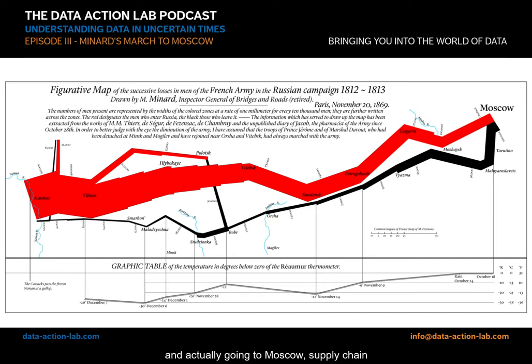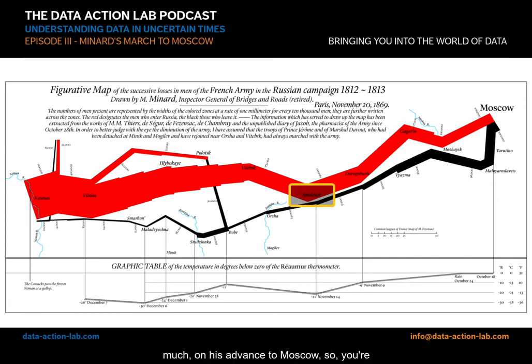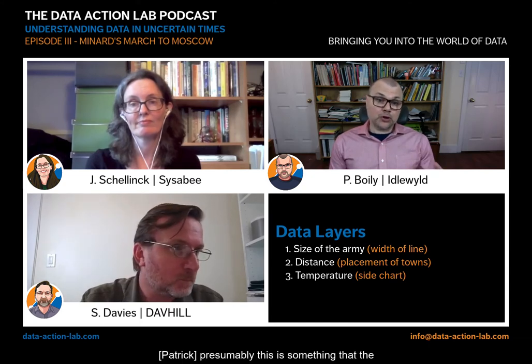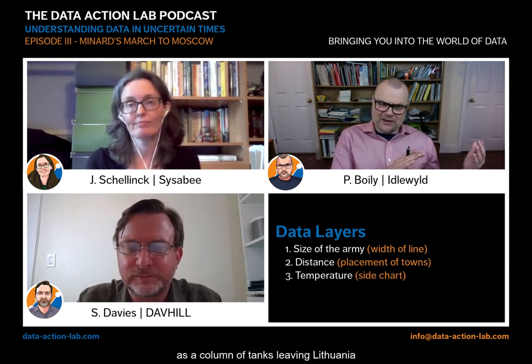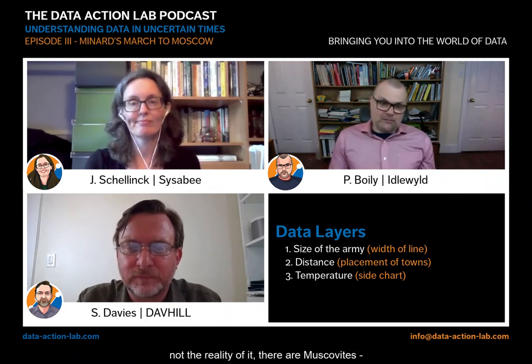Going to Moscow, supply chain was a big aspect — for example at Smolensk, twenty thousand troops were lost in battle, and there were rearguard actions by the Russian army all the way through on the advance to Moscow. So this does not represent all the reasons why the army was lost — supply chain, starvation, dysentery — but it still represents and makes very obvious the reduction in the size of the army. Presumably this is something the population of the time would know, but looking at this with a hundred years of distance it's easy to forget the Russians weren't just sitting there waiting to be marched upon.